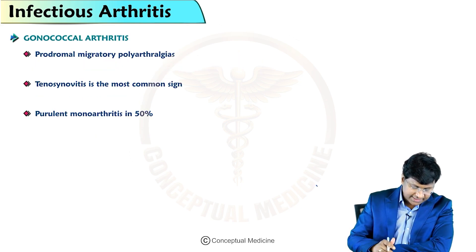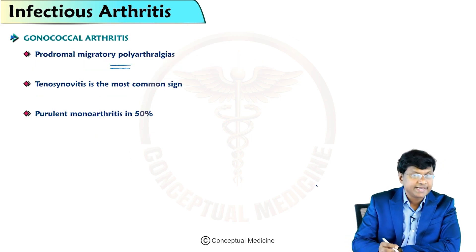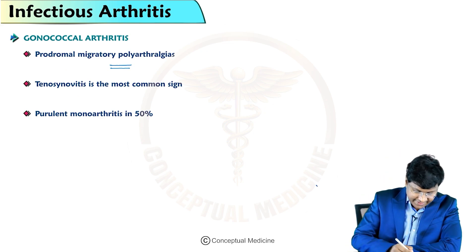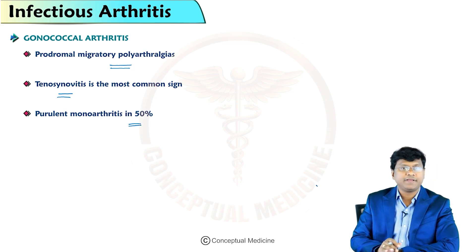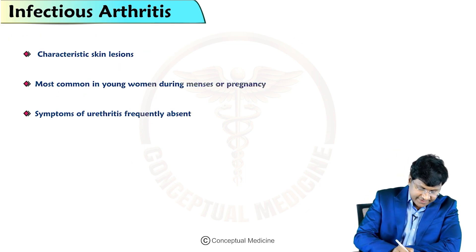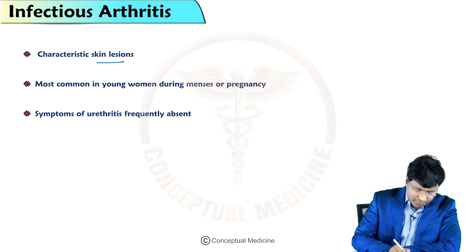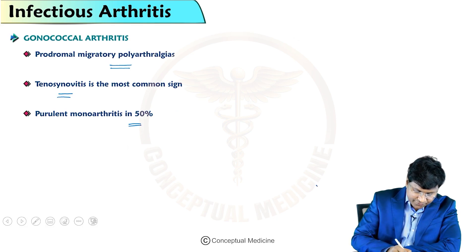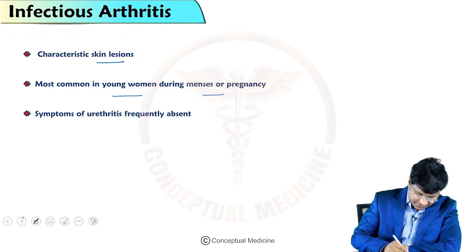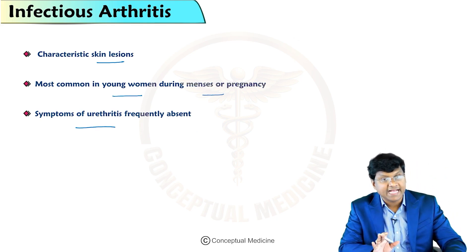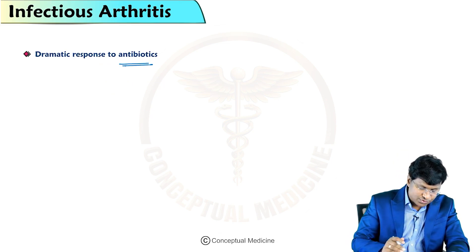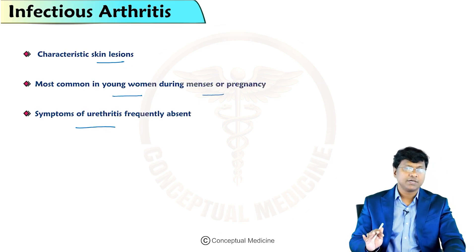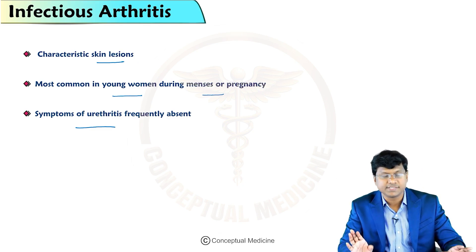In summary, gonococcal arthritis presents as a prodromal migratory polyarthritis. Tenosynovitis is the most common sign. Purulent monoarthritis is seen in about 50% of patients. There are characteristic skin lesions. It is most common in young women during menstruation or pregnancy. Symptoms of urethritis are frequently absent. There is a dramatic response to antibiotics.